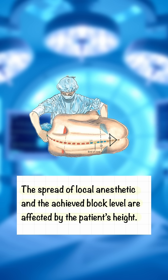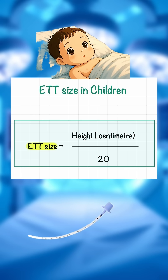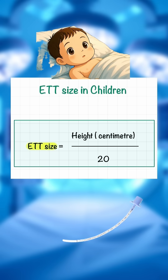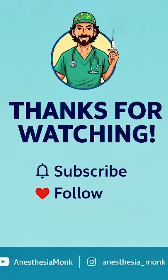The spread of local anesthetic and the achieved block level are affected by the patient's height. To find the correct endotracheal tube size in pediatrics, one equation is this.